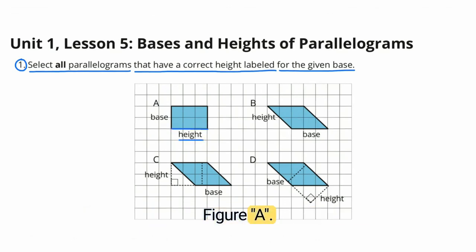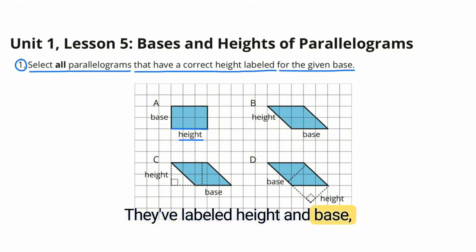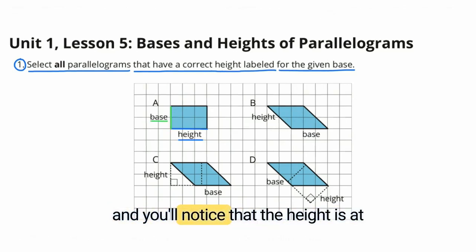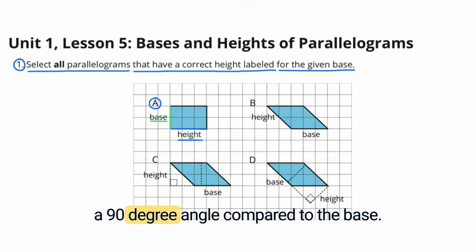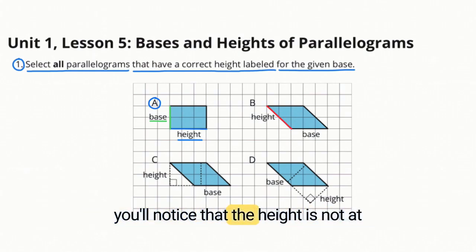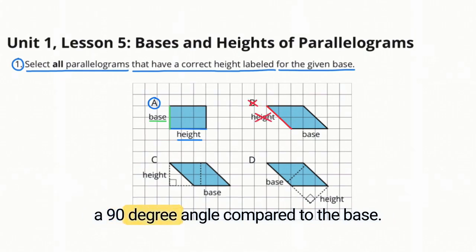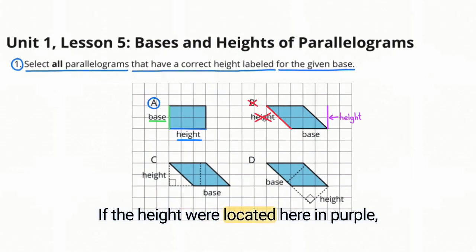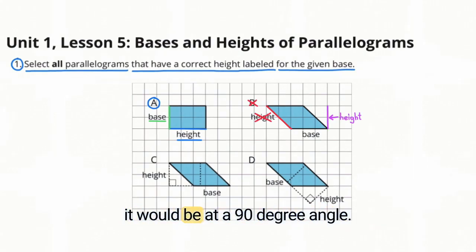Figure A: They've labeled height and base, and the height is at a 90-degree angle compared to the base. Figure B: They've labeled the height and the base, but the height is not at a 90-degree angle compared to the base. If the height were located here in purple, it would be at a 90-degree angle.